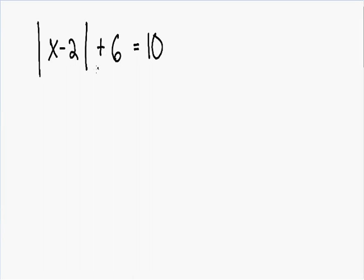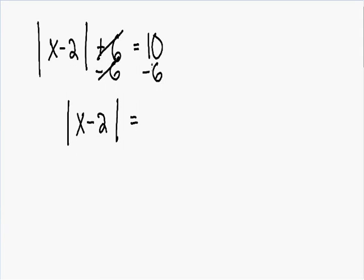So I'm going to get rid of this positive 6 by subtracting 6 from both sides. On the left side our positive 6 and negative 6 cancel out and the only thing we're left with is the absolute value of x minus 2. And on the right side we have 10 minus 6 which is equal to positive 4. So now we have the absolute value on one side of the equation and everything else on the other side.